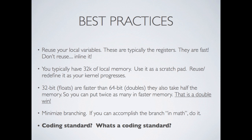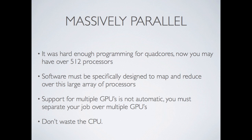What's a coding standard? This probably seems very different than what you're used to in other lessons. GPUs are massively parallel — it's hard enough programming for quad cores, but now you have as many as 512 processors. Software must be specifically designed to map and reduce over this large array of processors. Support for multiple GPUs is not automatic; you must separate your job over multiple GPUs yourself. Don't waste the CPU either — it's still there and can do useful things. The most effective programs make use of both GPU and CPU together.